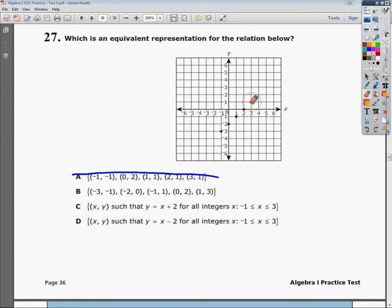B says I should have a point at negative 3 and negative 1. So I'm going to look at negative 3 and go down to negative 1. There should be a dot right there, and there's not. So that's not correct either, B is out.